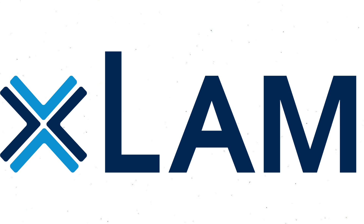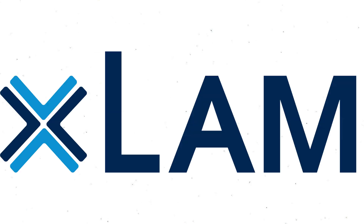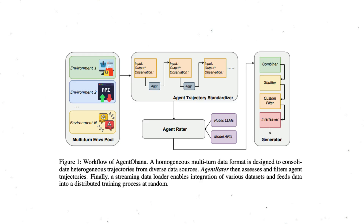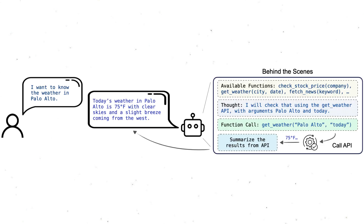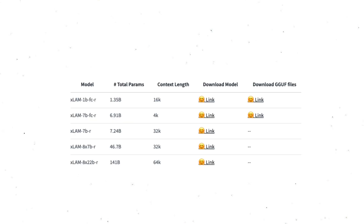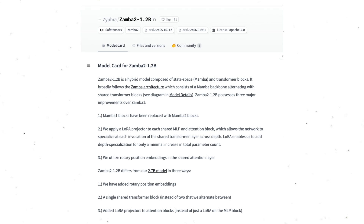The next one is from a very big corporation — Salesforce. The model is called xLAM, which stands for Large Action Model, a term popularized by the company Rabbit. This is Salesforce's own large action model designed for enhanced decision-making and AI agent use cases. It supports up to a 64,000 context window and can translate user intentions into executable actions. It comes in different sizes including an 8x7 billion parameter variant, with other variants available on Hugging Face.